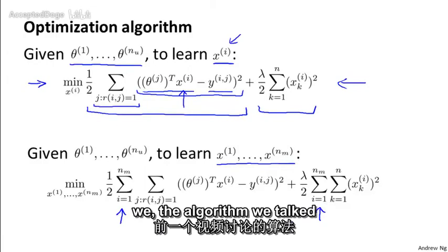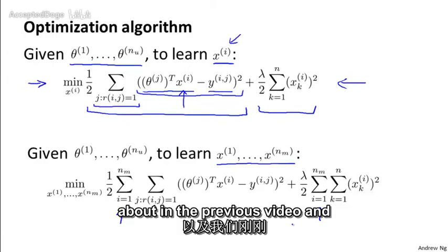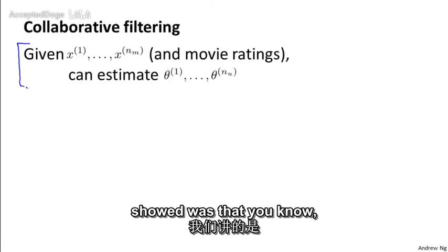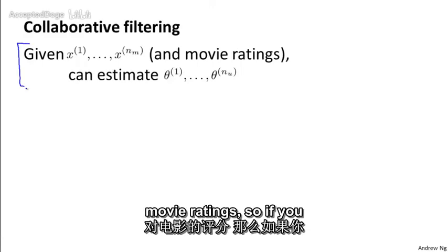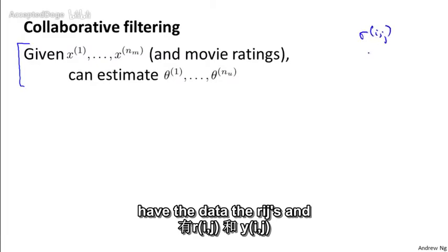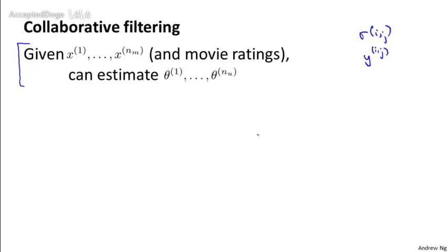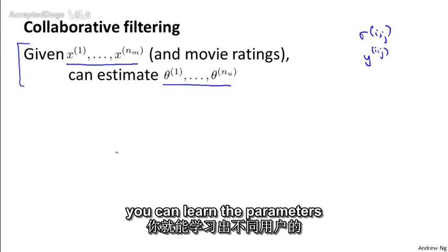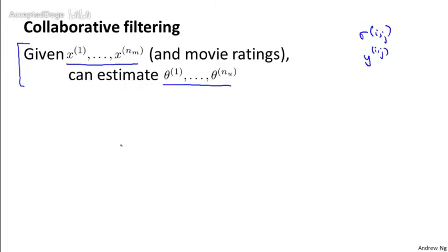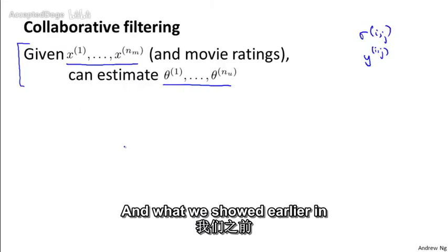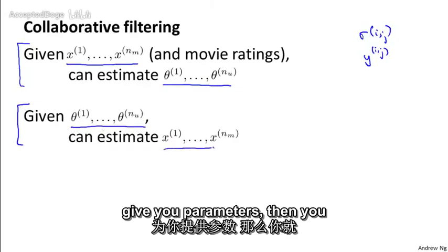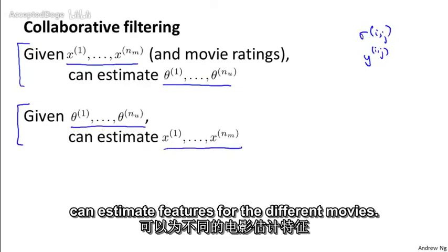So putting everything together, what we, the algorithm we talked about in the previous video and the algorithm that we just talked about in this video. In the previous video, what we showed was that if you have a set of movie ratings. So if you have the data, the rijs, and if you have the yijs, so you've had the movie ratings. Then given features for your different movies, we can learn these parameters theta. So if you need the features, you can learn the parameters theta for your different users. And what we showed earlier in this video is that if your users are willing to give you parameters, then you can estimate features for the different movies.